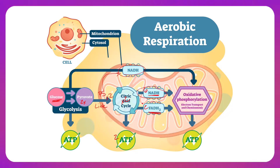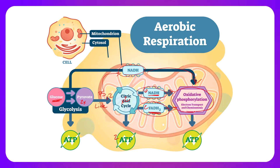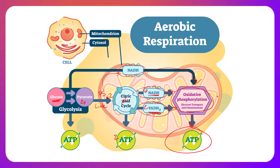All of the NADH and FADH2 made during glycolysis, the link reaction, and the Krebs cycle will head to the cristae membrane, which is where the electron transport chain is located. This is where chemiosmotic phosphorylation, or oxidative phosphorylation, occurs and pumps out a large amount of ATP. The next video will cover the chemiosmotic pathway and ATP production, but this video was targeted specifically at the Krebs cycle.